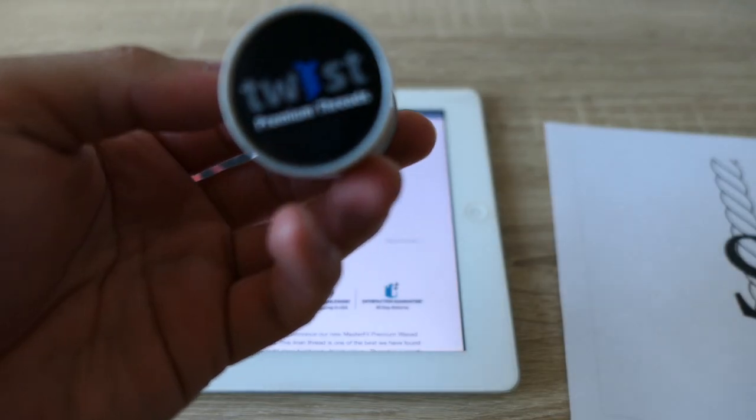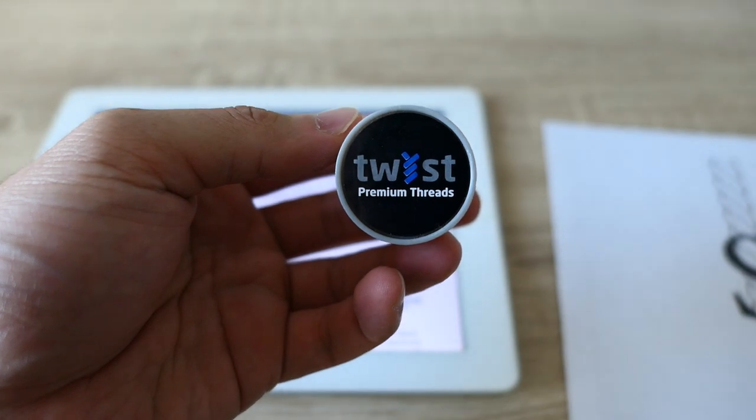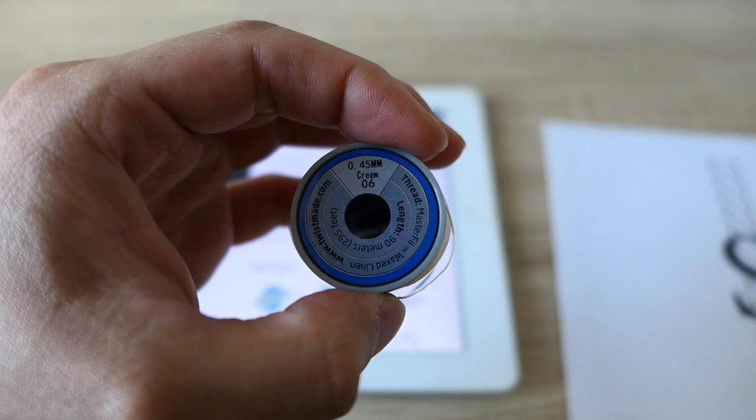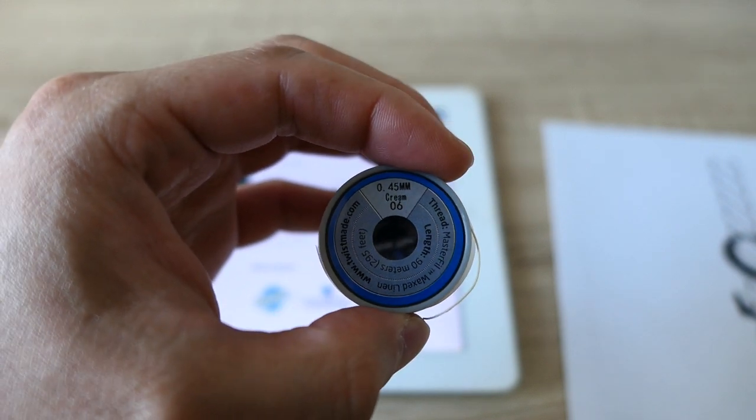This is the one that I showed in the unboxing video. It's a twist premium thread. It's 0.45mm with a cream color.